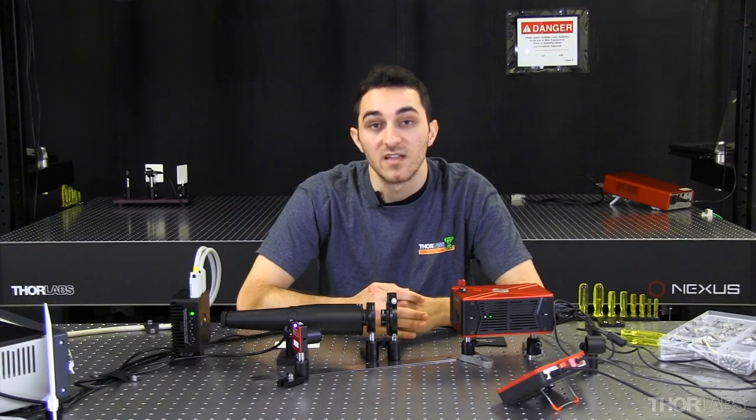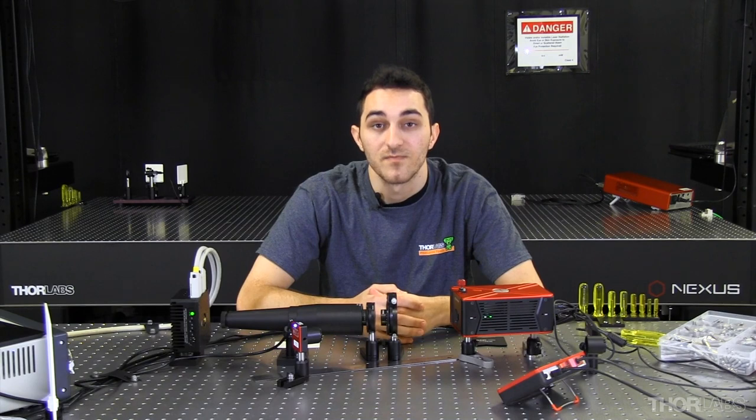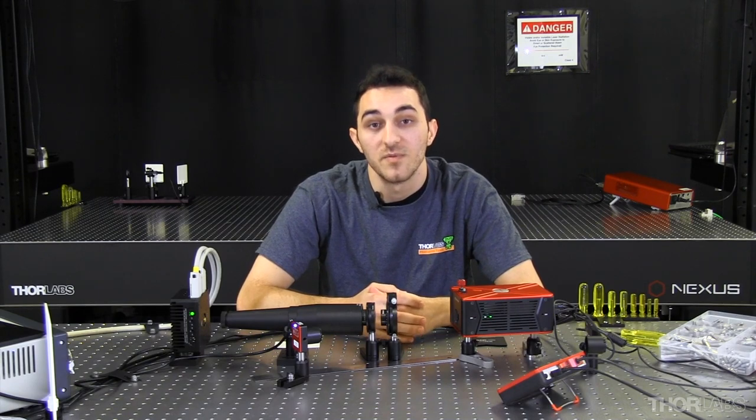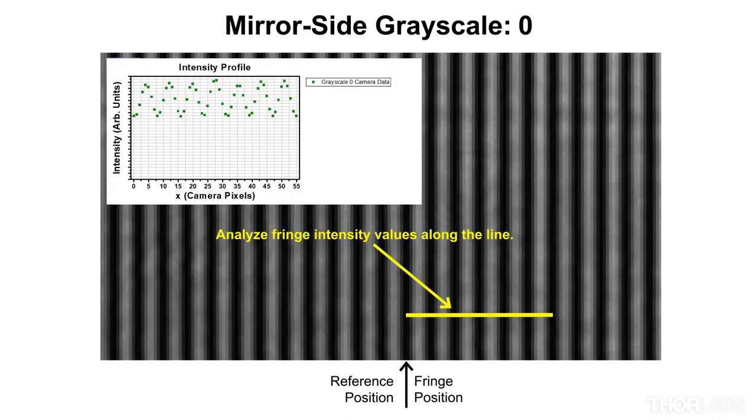Various approaches can be used to analyze the data, such as curve fitting and Fourier analysis. For this demonstration, I'll be using a curve fitting approach. I need to analyze a line profile over a group of fringes with the same period. The more fringes within my line profile, the more accurately I'll be able to estimate the phase shift.